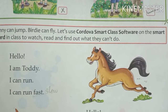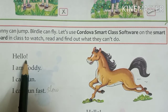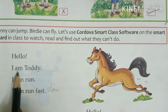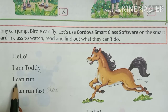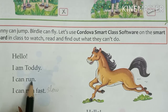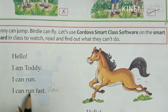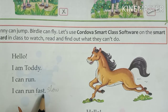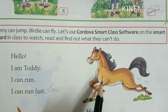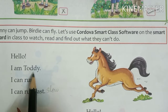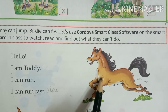Now we will read the lesson. H-E-L-L-O. Hello. I am Toddy. I can run. I can run fast. This is a horse and this horse's name is Toddy. Toddy can run fast.